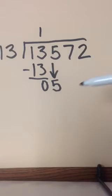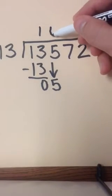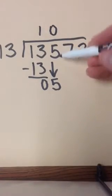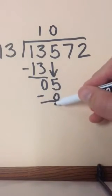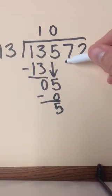13 will go into 5 zero times, so we have to show that. 13 times zero is zero. We subtract, and we have 5 left over. And we bring down our 7.